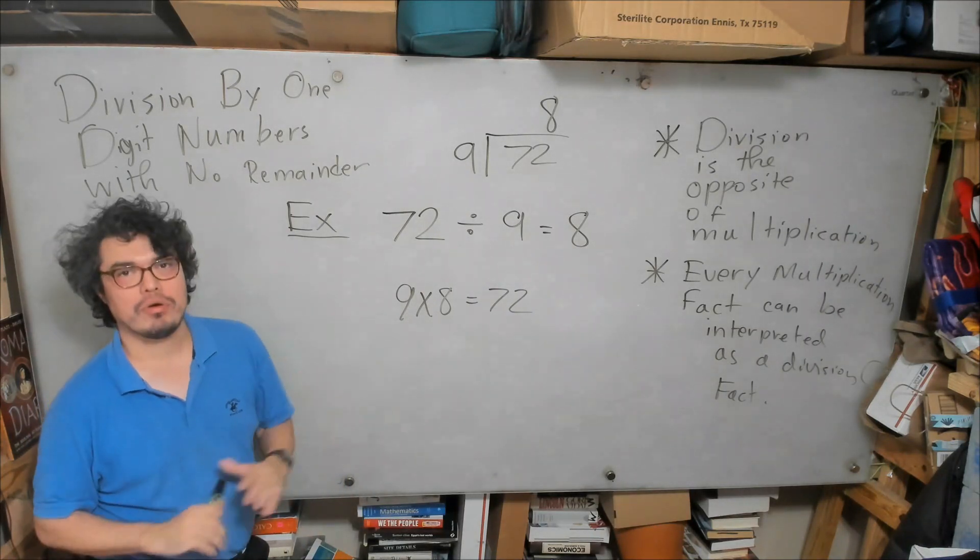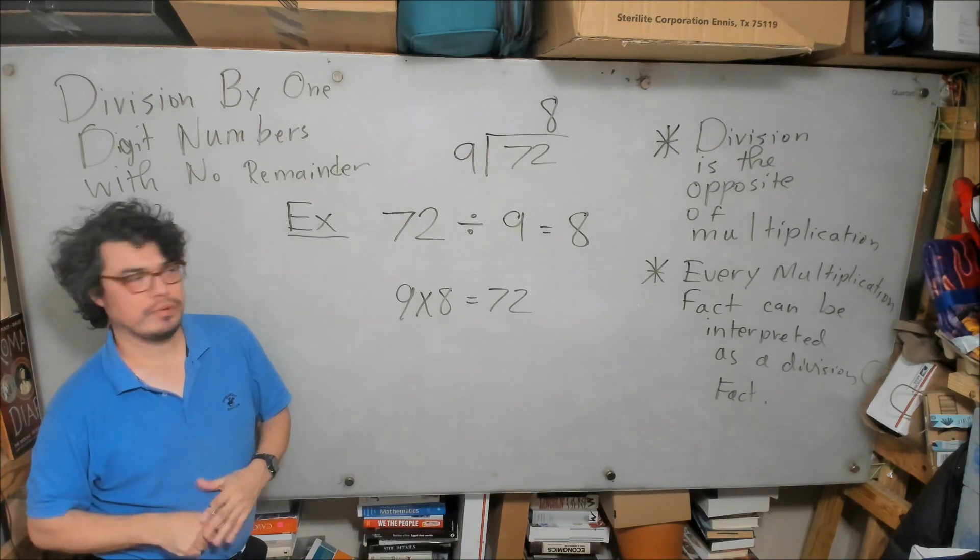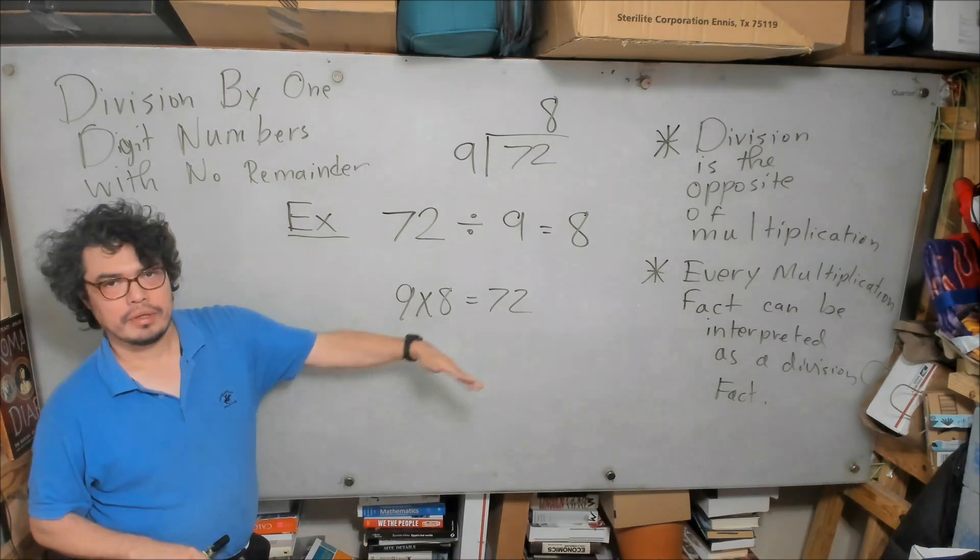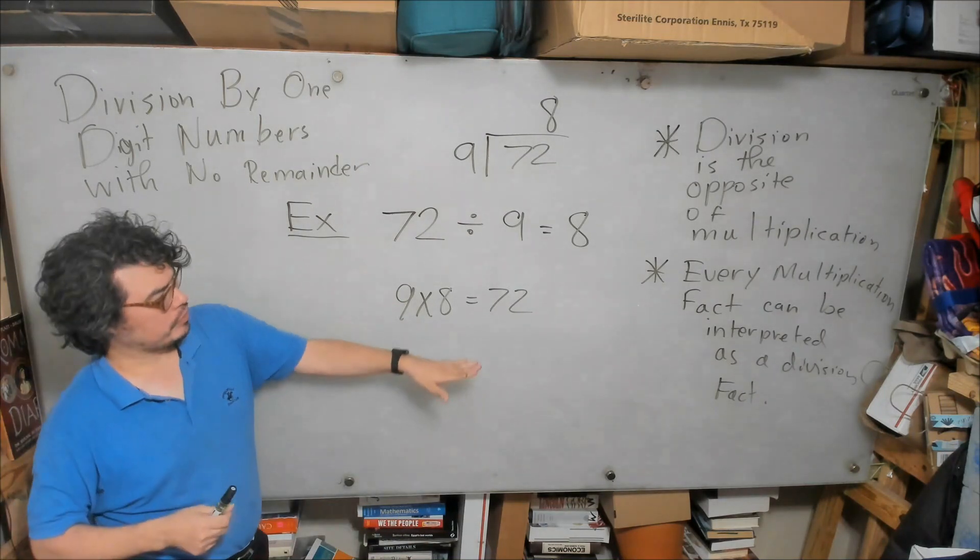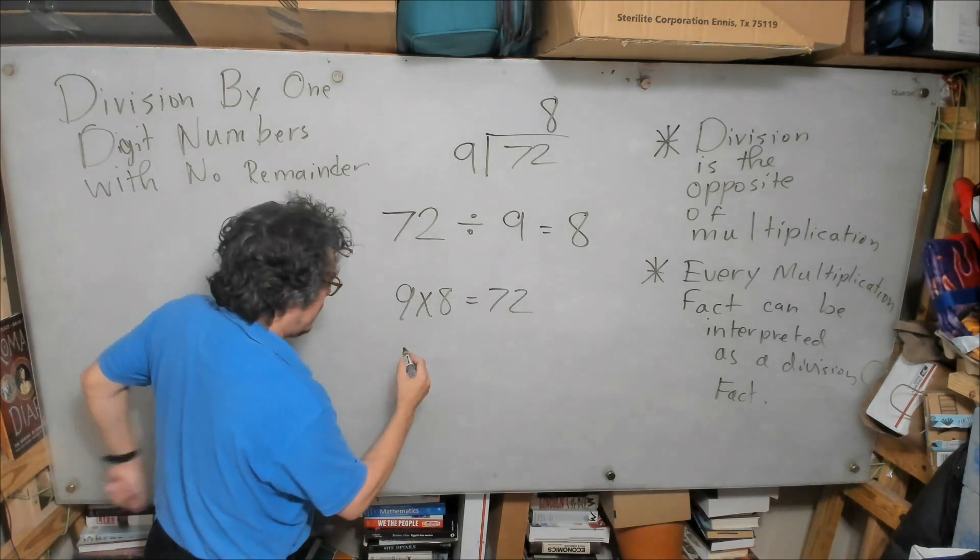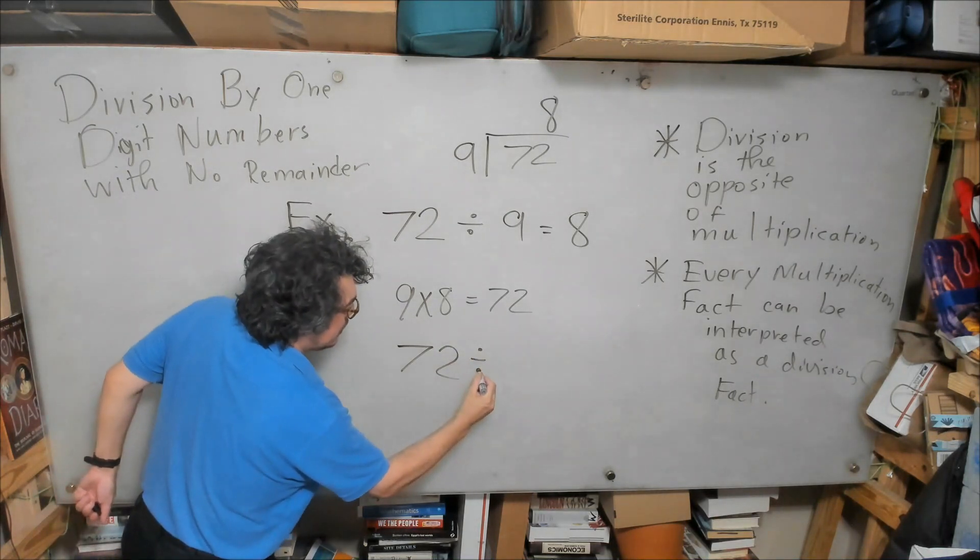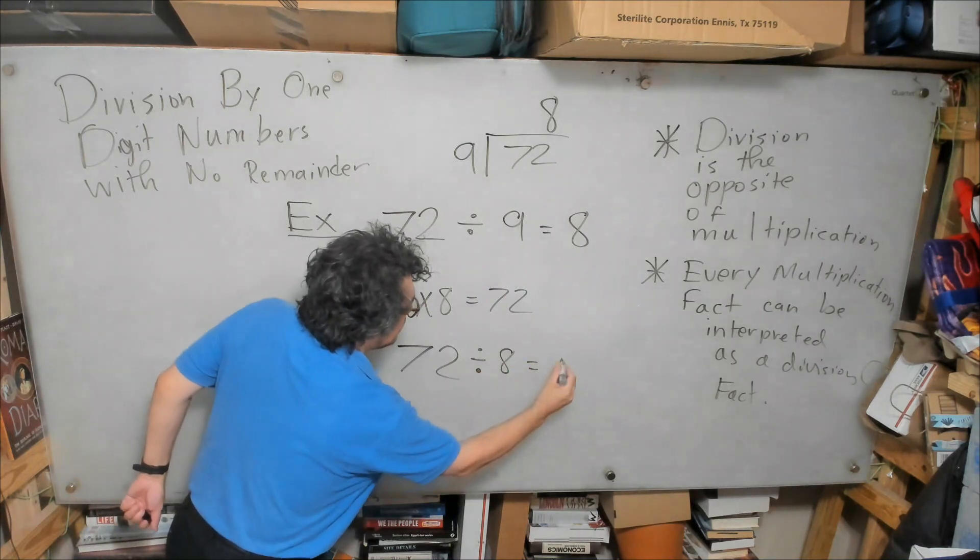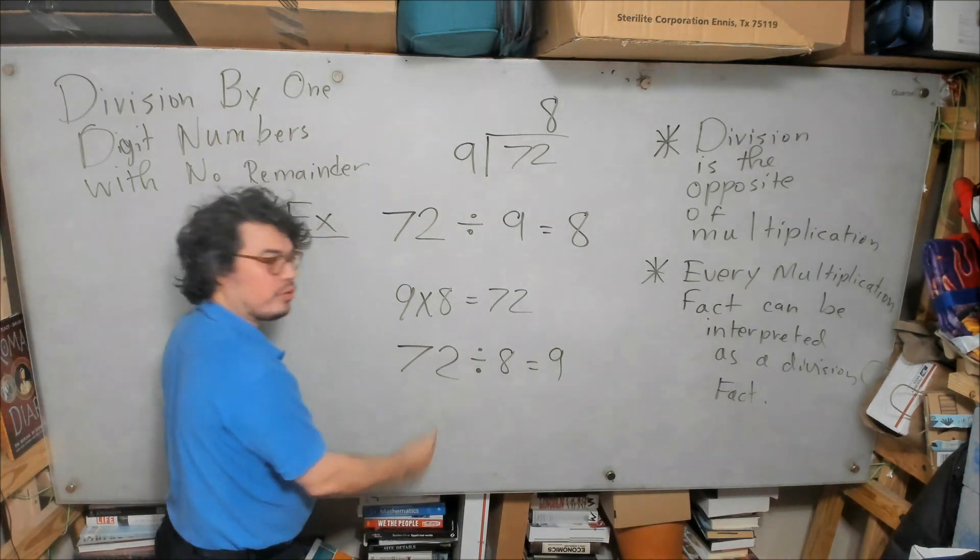Now we can ask the question just for our own benefit: is there an additional division fact we can derive from this multiplication? I'm sure you already know the answer. Well, it would be that 72 divided by 8 is equal to 9. Why? Because 9 times 8 is equal to 72.